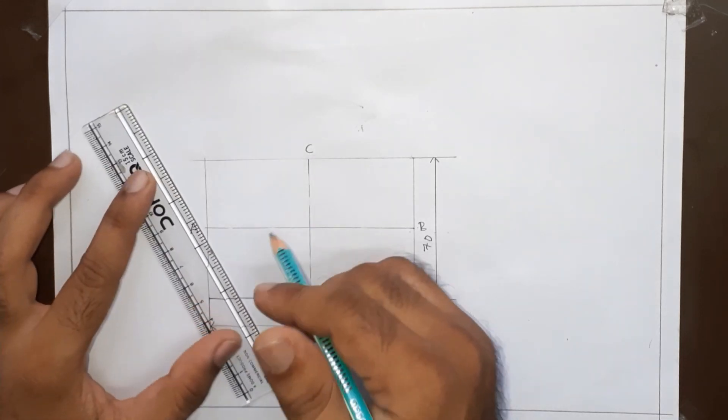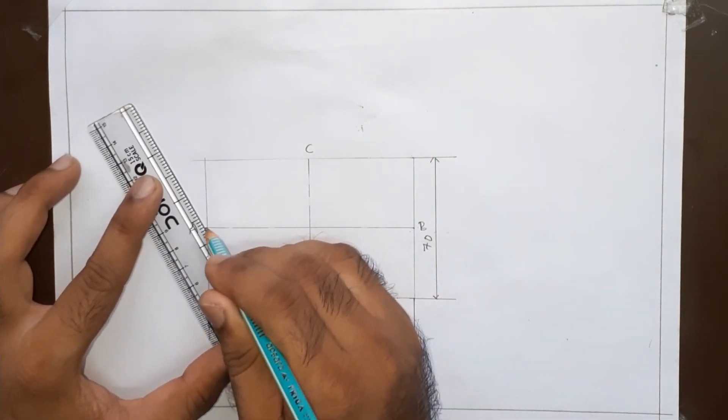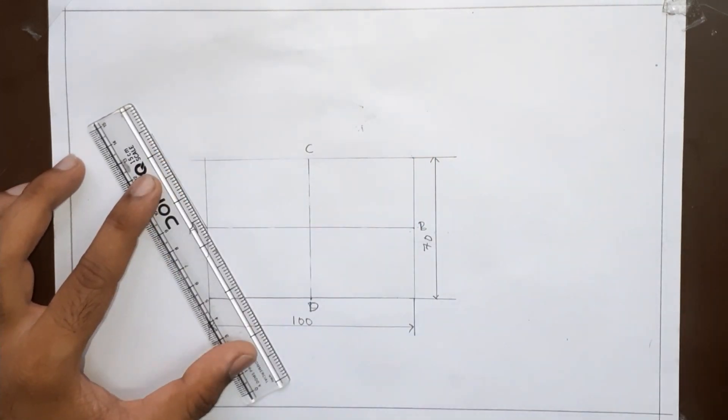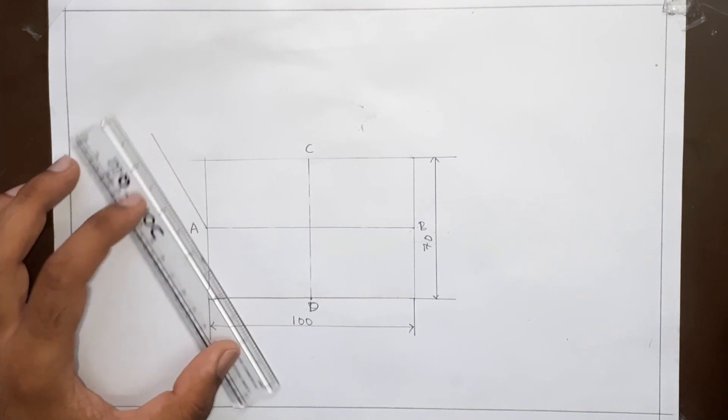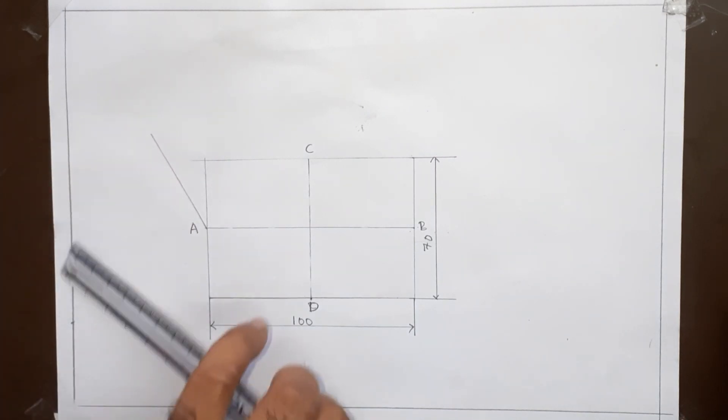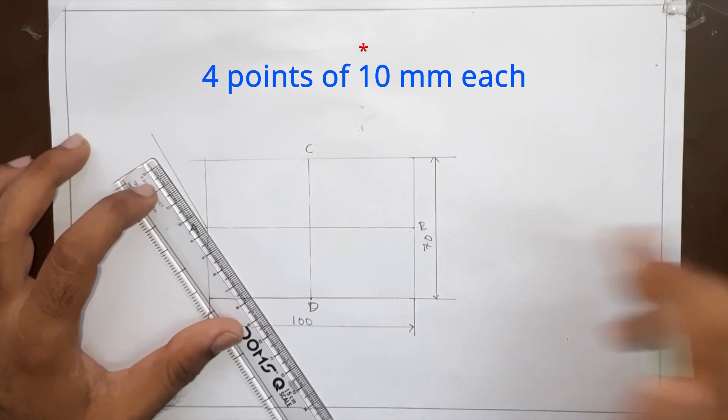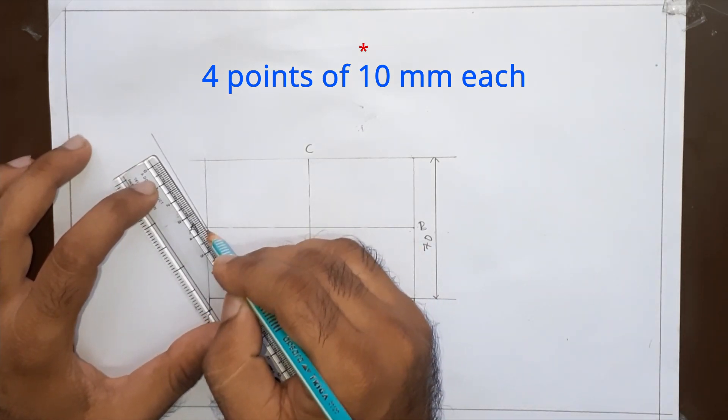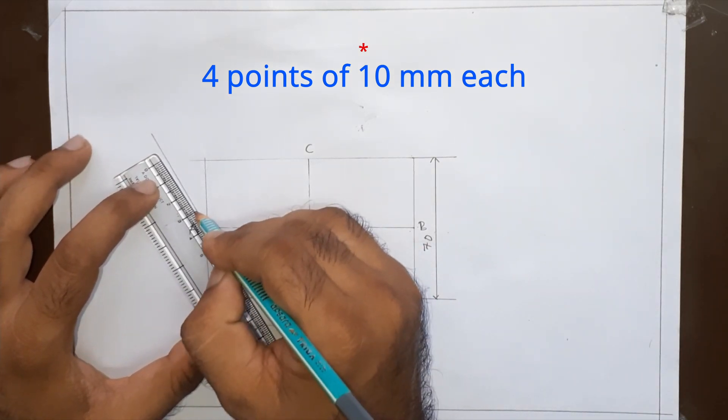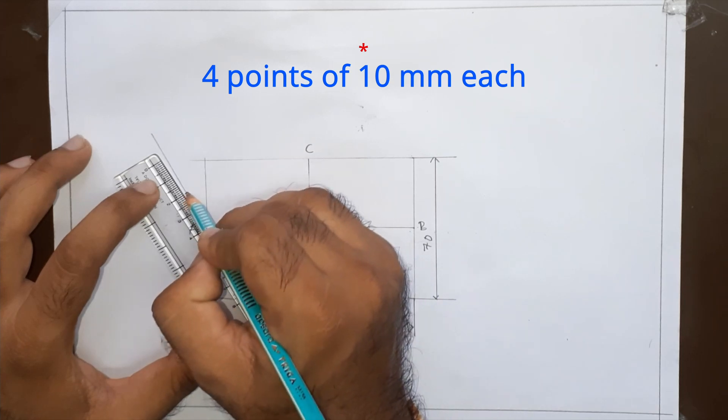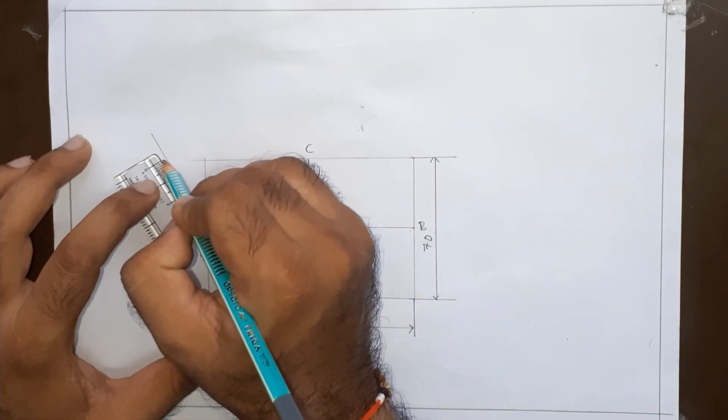So for that, we will randomly draw one line like this. Then we will mark 4 points of 1 mm each. This is point number 1, 2, 3 and 4.